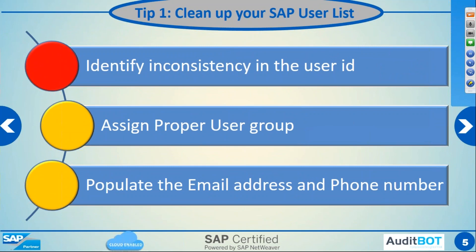Tip one: identify inconsistent user IDs, which basically means user IDs not following the naming convention, user IDs with 'test' in them, and similar types. Make sure you identify user IDs which are not aligning with your company's naming convention. Assign proper user groups — we always advise clients to have groups like end user finance, end user HR, or location-based groups such as South America, North America, Europe, and also functional security teams. We always advise customers to populate email address and phone number, which is very useful for identifying unique or duplicate users. If the same email ID is used for two different people, it could be a duplicate ID.